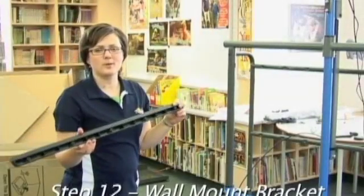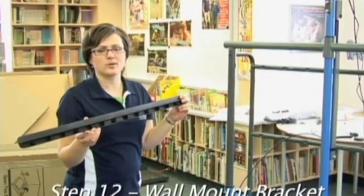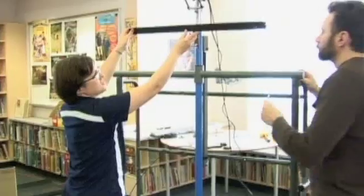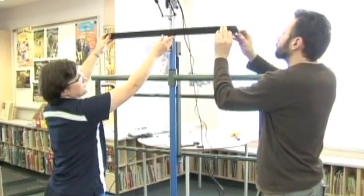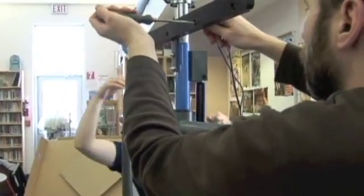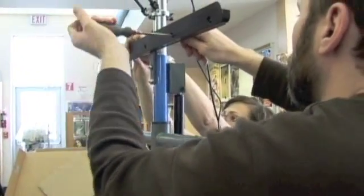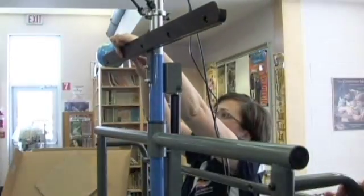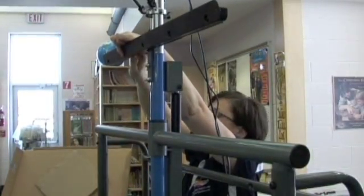Using the wall mount bracket that came with your smart board, attach it to the iRover stand. This bracket is provided with your smart board. Ensure you install the bracket in the proper direction with the bolt holes to the bottom, creating a channel for the smart board to sit on.